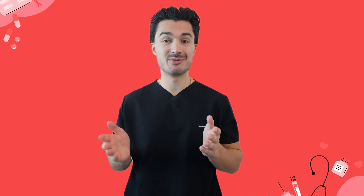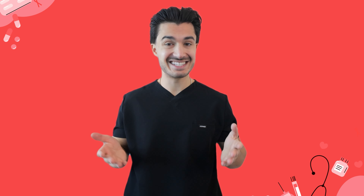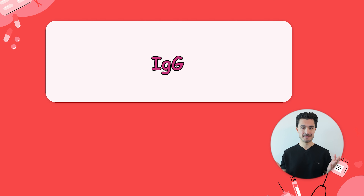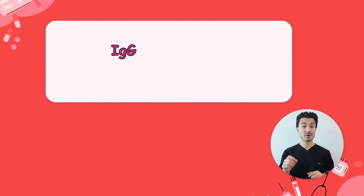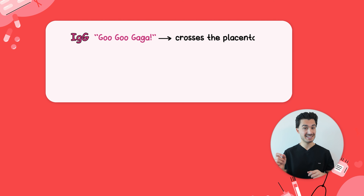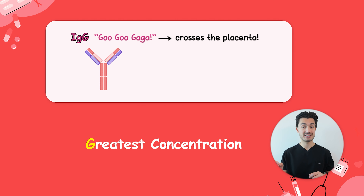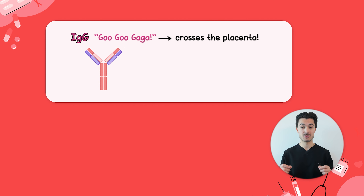Now let's move to the second immunoglobulin, which is also the key player in the secondary immune response — and that is IgG. Remember 'Gugu Gaga' for crossing the placenta, and the G for greatest concentration, as IgG has the highest serum concentration of all immunoglobulins.